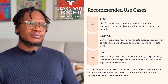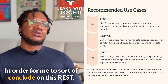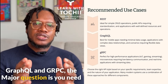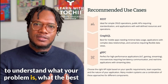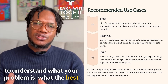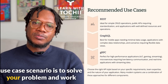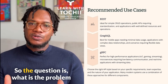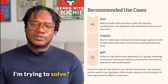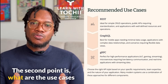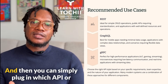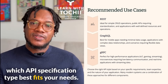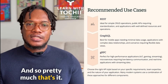In order to conclude on REST, GraphQL, and gRPC — the major question is you need to understand what your problem is, what the best use case scenario is to solve your problem, and work with your development team to actually solve those problems. The question is: what is the problem I'm trying to solve? What are the use cases for these problems? And then you can simply plug in which API specification type best fits your needs.